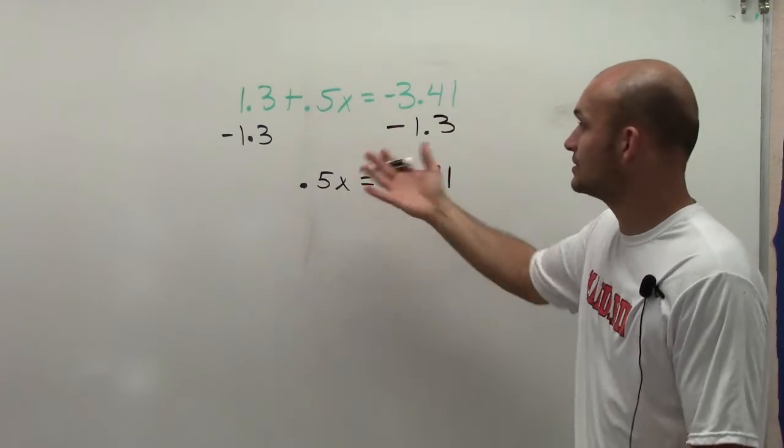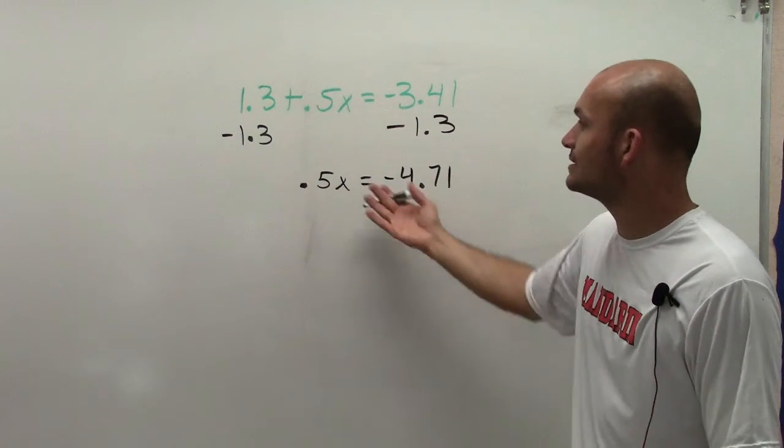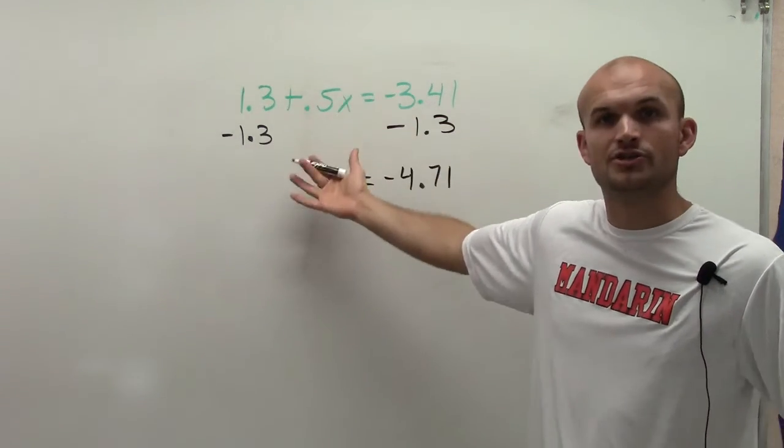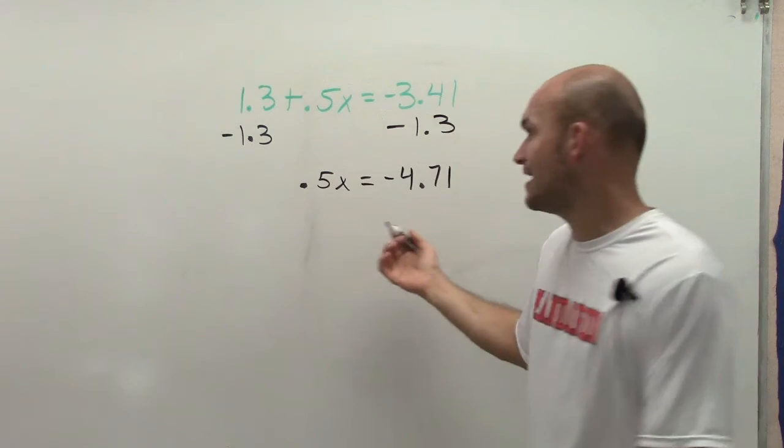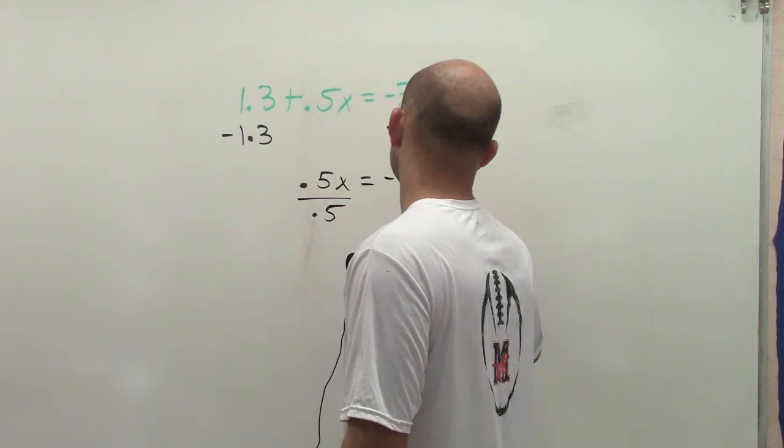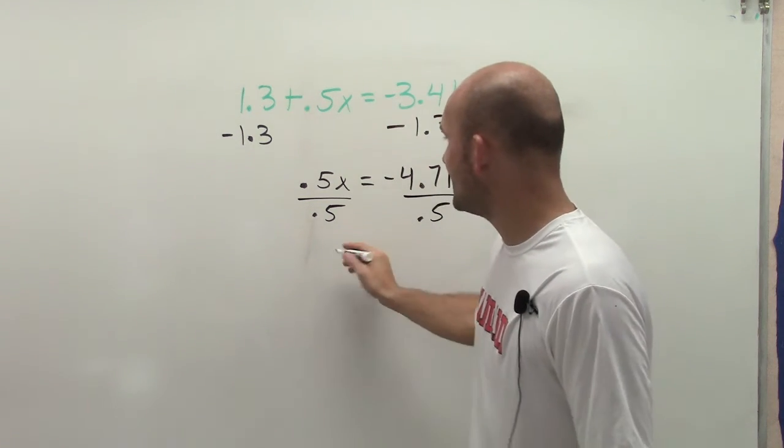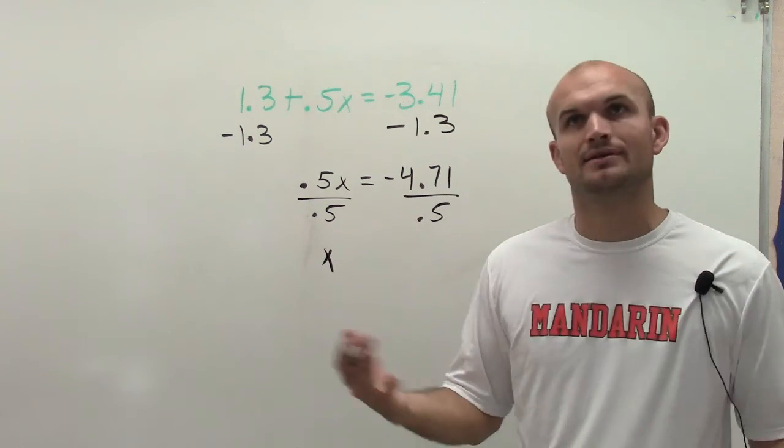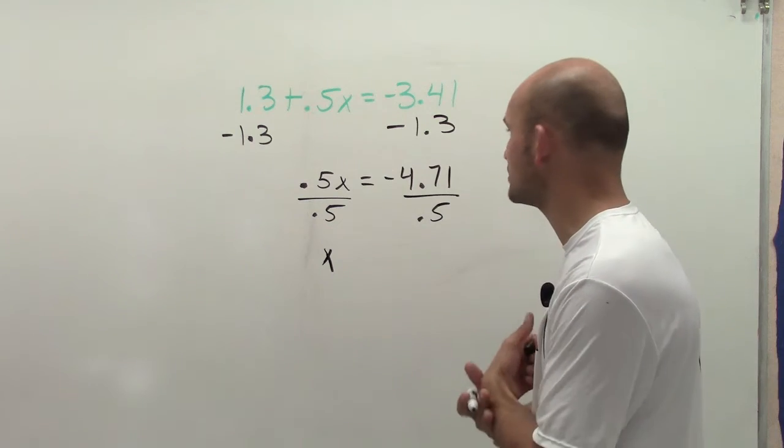All right, then I just look at this and I say, well, now what I need to do is undo the multiplication of 0.5. So I'm going to divide by 0.5. Okay, we can divide by 0.5. Remember, you can just check your calculator and make sure it's going to work.